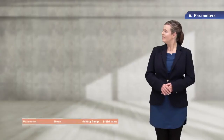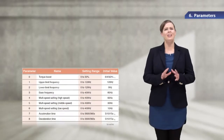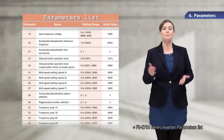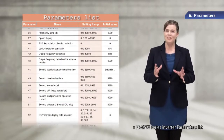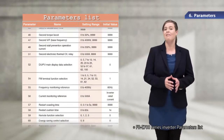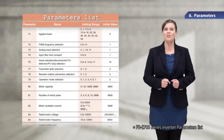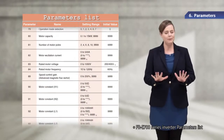It might be better if you keep this useful function in mind. There are a lot of parameters available for Mitsubishi general purpose inverters. Most of these parameters have preset initial values which enable the motor to run with minimum settings. Let's take a look at the basic parameters required to run the motor.